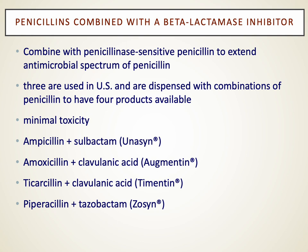We often combine penicillins with a beta-lactamase inhibitor. These inhibitors have been around for a couple of decades. Tazobactam is the inhibitor component in piperacillin-tazobactam. Sulbactam is combined with ampicillin (brand name Unasyn, IV). Augmentin is a very commonly used oral combination of amoxicillin with the beta-lactamase inhibitor clavulanate. These combinations broaden coverage against pathogens such as Haemophilus influenzae that produce beta-lactamases.